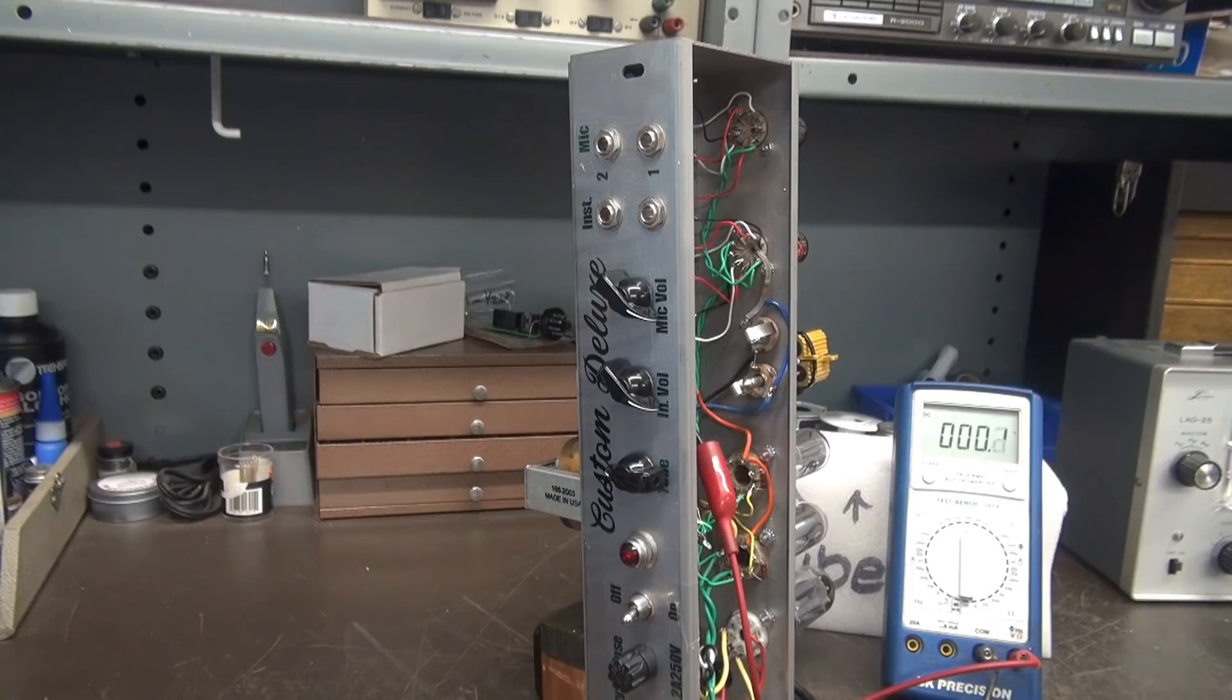I'm going to bring up my variac and watch my current very carefully, make sure I don't see any fluctuations. See if our dial light comes on. Look, we're starting to build some high voltage. I do have a dummy load connected. I'm up to 50 volts input—see the light coming up. She's looking good, about 80 volts, and about 100 volts input.